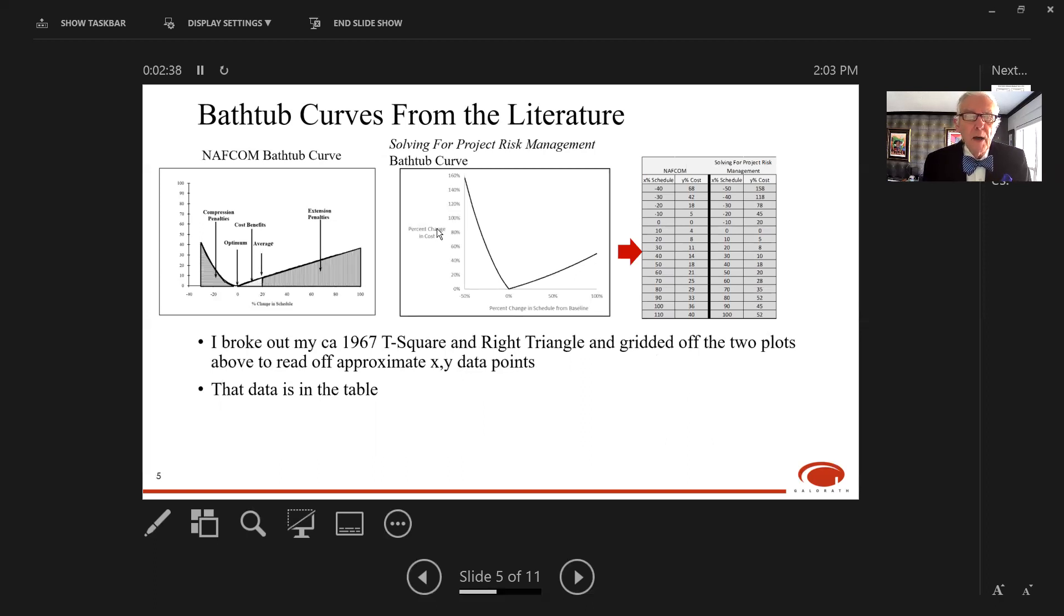I took the two curves and used my 1967 T-square and right triangle to grid off the two plots, which allowed me to read off the approximate XY data points corresponding to these curves. Those data points are shown in the table on the right. For example, the first data point for NAFCOM is minus 40 percent schedule, a 40 percent compression, predicting a cost penalty of about 68 percent. For the Solving for Project Risk Management curve at minus 50 percent schedule, it predicts around 158 percent cost penalty.